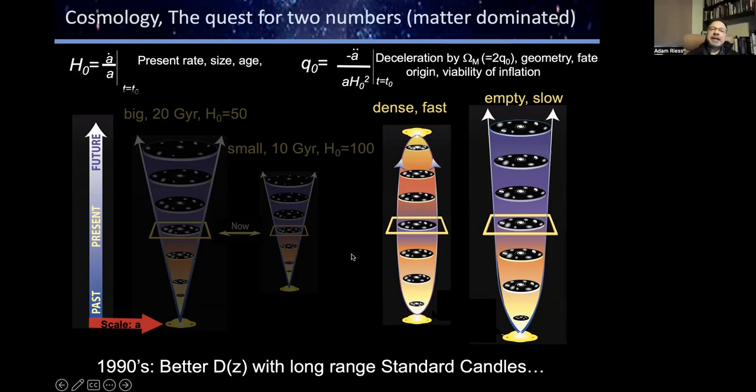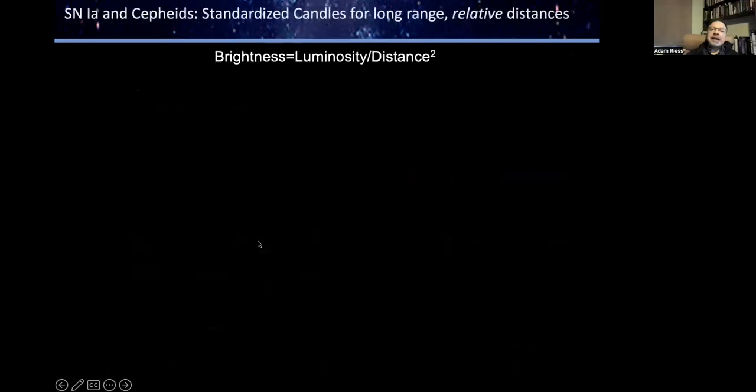The 1990s was a special time for learning about these properties of the universe because it was when we got the first really long-range distance indicators, referred to as standard candles, for making empirical measurements of the expansion history of the universe. In this talk, I'm going to discuss two kinds of standard candles.